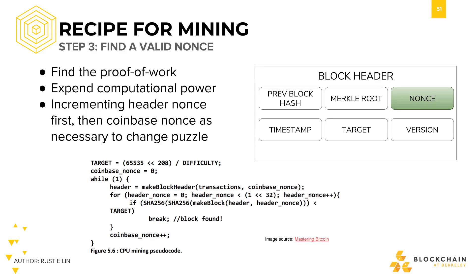Now let's look at step three: how to find a value nonce. Every miner needs to find a value nonce that will make their block header less than a target value. This is how we implement proof of work in Bitcoin and every other proof of work cryptocurrency. By finding the nonce, we have translated the energy burned in computation directly into voting power in the proof of work consensus protocol.